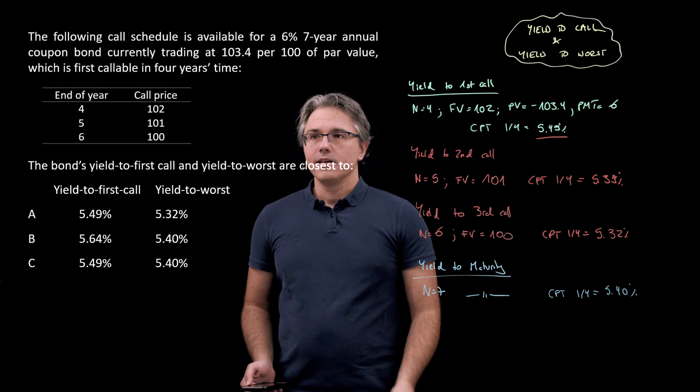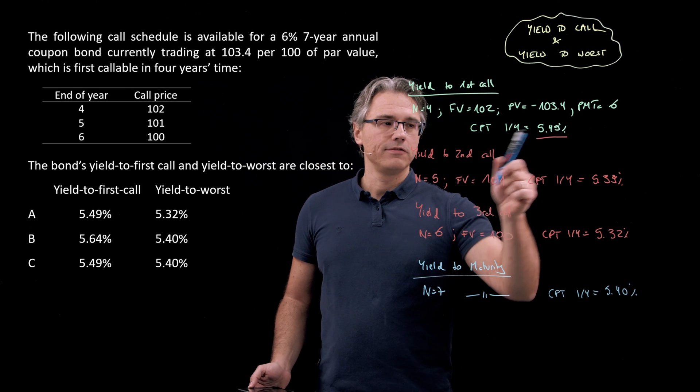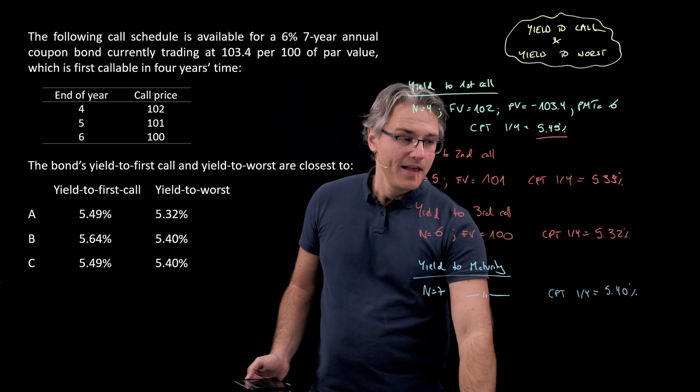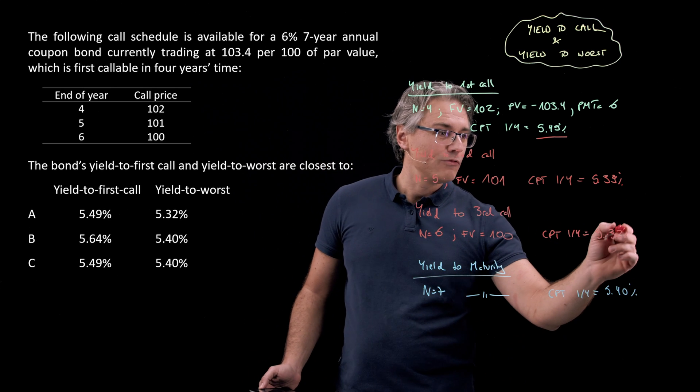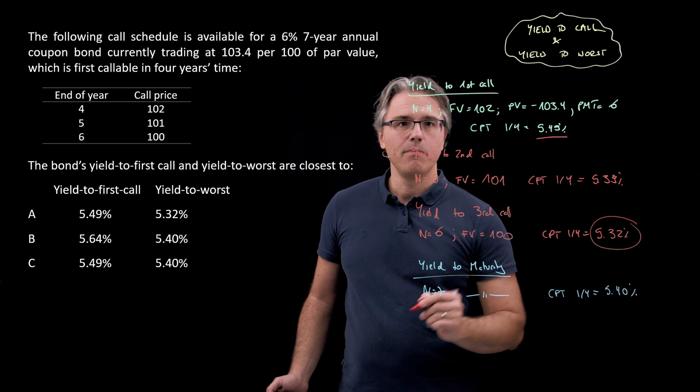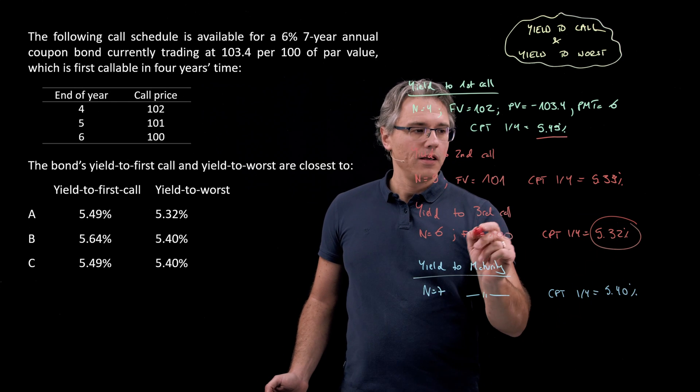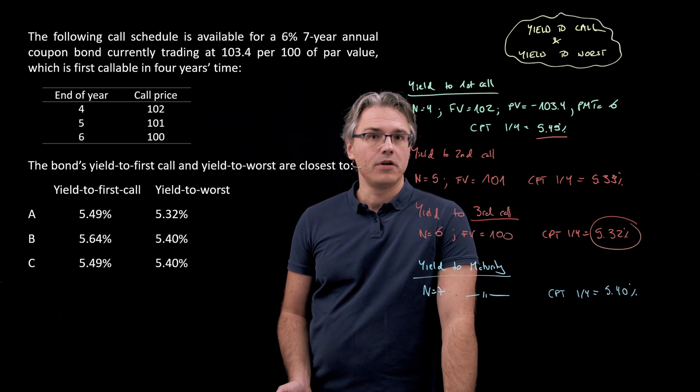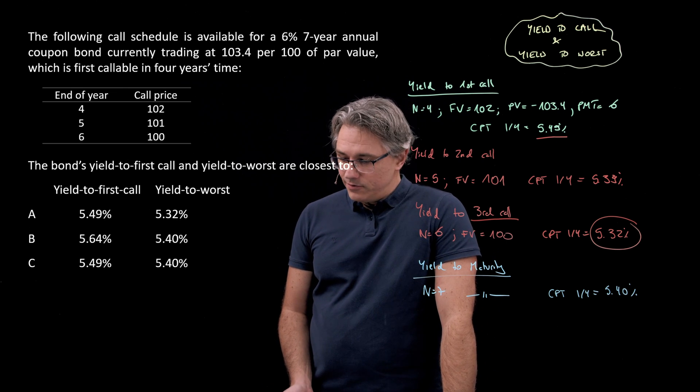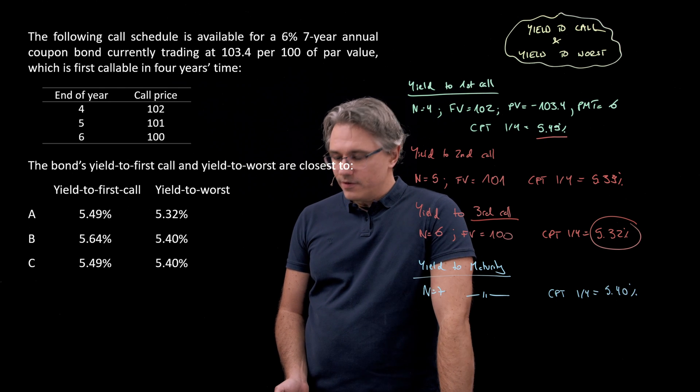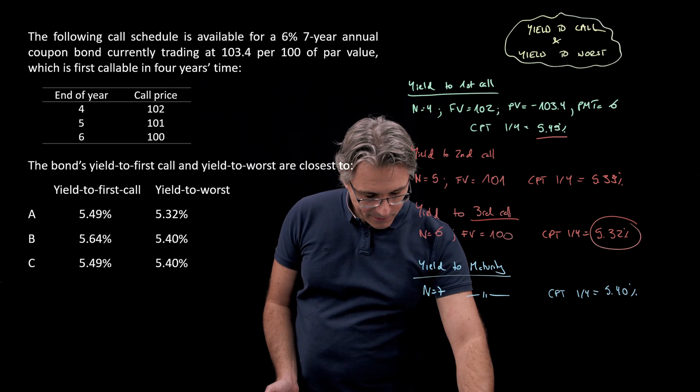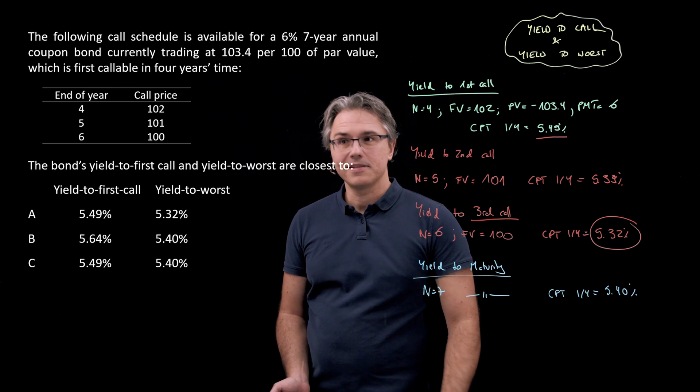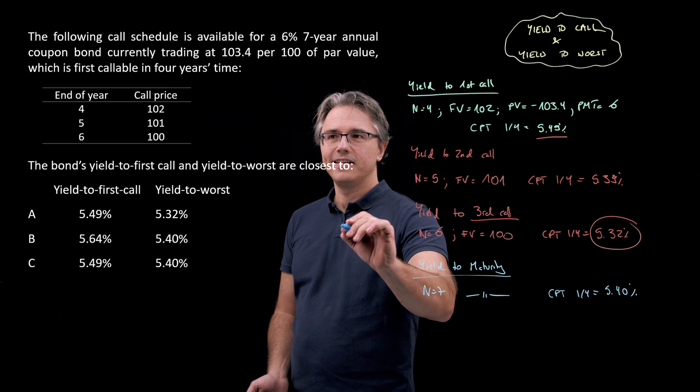So we know the yield to first call and we can now pick the lowest of these yields. And the lowest yield is the one associated with the bond being called on its third call date at a price of 100. So this is the yield to worst. And if I look at the answers, the possible answers to this question, then this combination is shown in answer A.